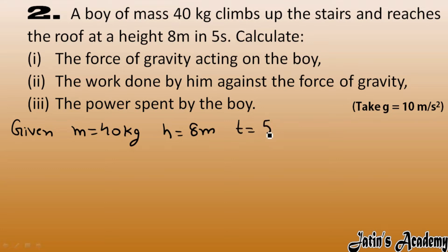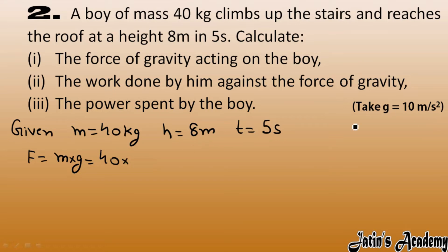To calculate the force of gravity: F = m × g. Mass = 40 kg and g = 10 m/s², so force of gravity = 40 × 10 = 400 Newton. So the force of gravity acting on the boy is 400 N.